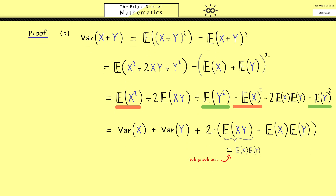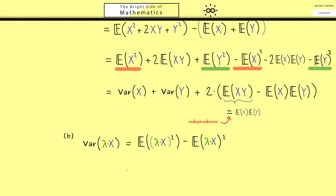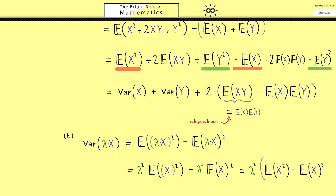Now let's go to part B. Part B is much easier because only one random variable is involved. Again we use the formula with expectations for the variance: first the expectation where the random variable is squared, then we square the expectation. In both terms we can pull out a lambda squared simply by using the linearity of the expectation. We factor out the lambda squared, and the remaining difference of the two expectations is exactly the variance of X. In other words, we have proven part B.